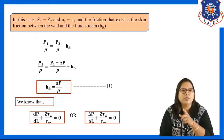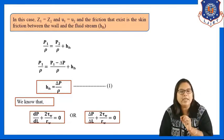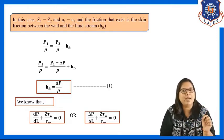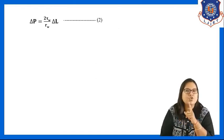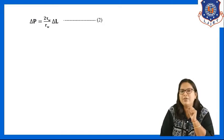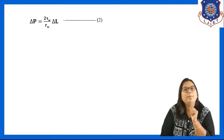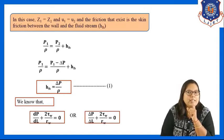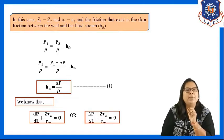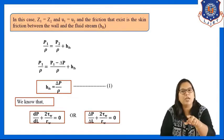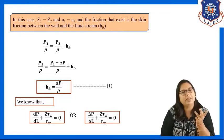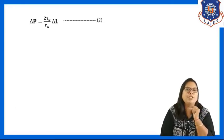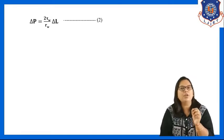Rearranging for delta P: delta P = 2*tau_w/rw × delta L. Note that delta P is defined as P1 minus P2, so the sign convention gives a positive result, and we write delta P = 2*tau_w * delta L / rw. This is Equation 2.